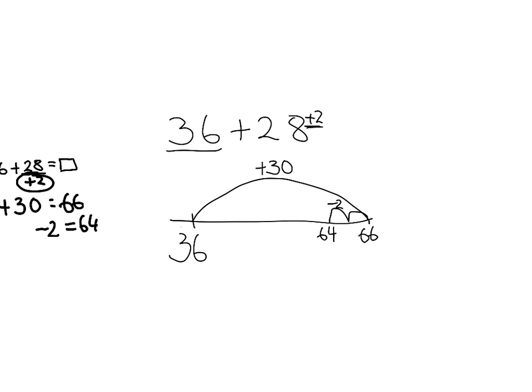Now to check we've added the correct amount, we can verify: 30 minus 2 equals 28. And that was rounding and compensating at stage 6.